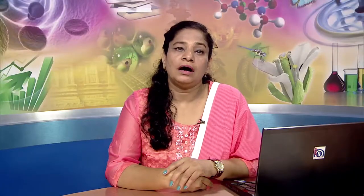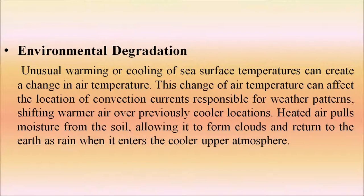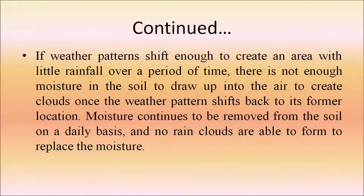Next is environmental degradation. Unusual warming or cooling of sea surface temperature can create changes in air temperature, which affect the location of convection currents responsible for weather patterns. Shifting warmer air to previously cooler locations causes heated air to pull moisture from the soil, forming clouds that return to earth as rain. If weather patterns shift to create an area with little rainfall over time, there is not enough moisture in the soil to form rain clouds.